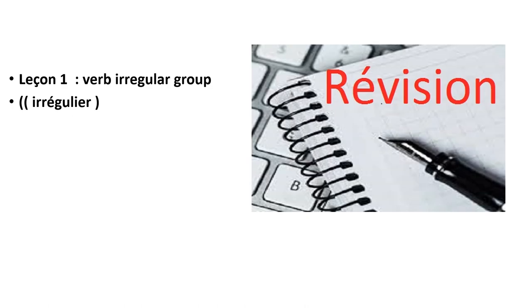Lesson 1. Leçon 1. The irregular verbs group. Le verbe irrégulier. In this lesson, we're going to revise the third irregular verb in French — irrégulier — to describe an event in French language.